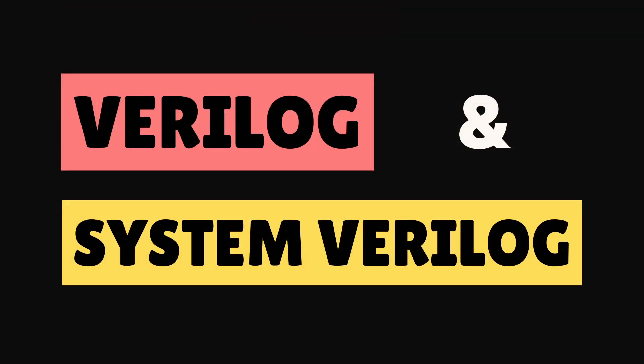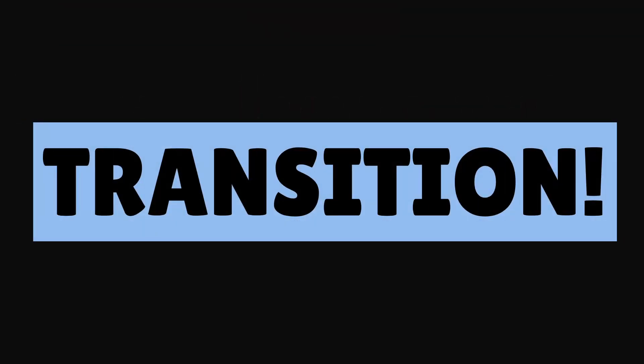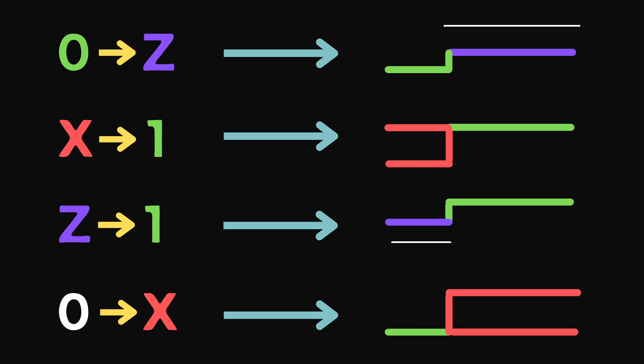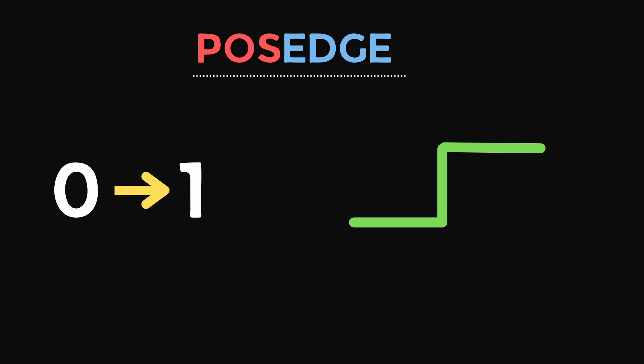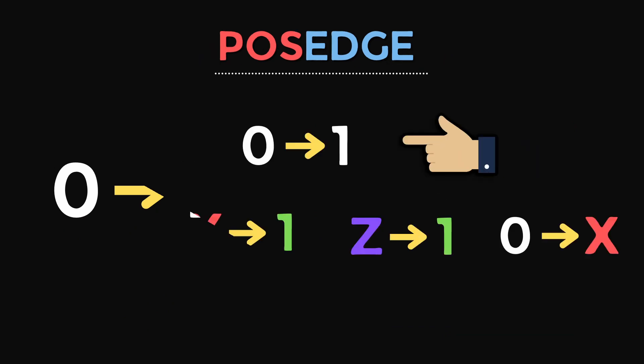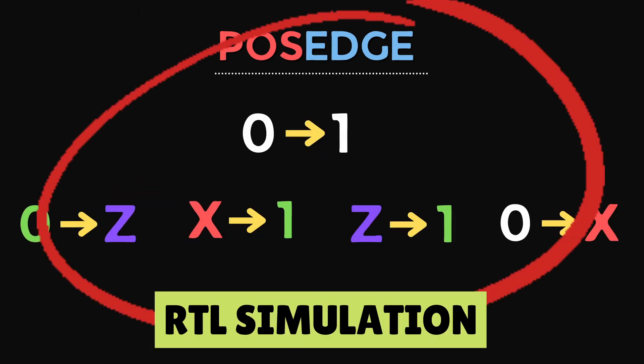In third example of X optimism, we will see how Verilog and SystemVerilog treats transition to X or Z. These are few transitions: 0 to Z, X to 1, Z to 1, and 0 to X. We know that positive edge means 0 to 1 transition, but for Verilog and SystemVerilog, all are valid logic transition that will trigger a positive edge.